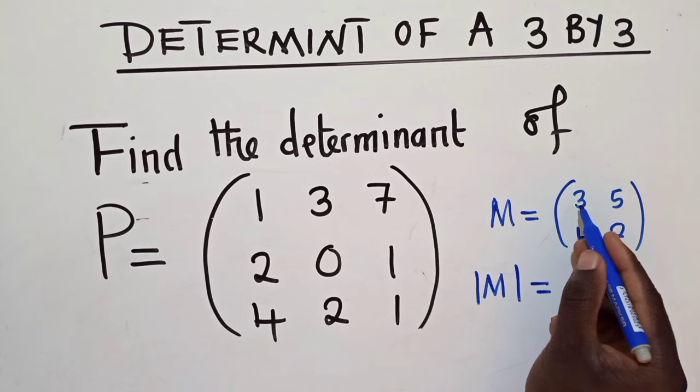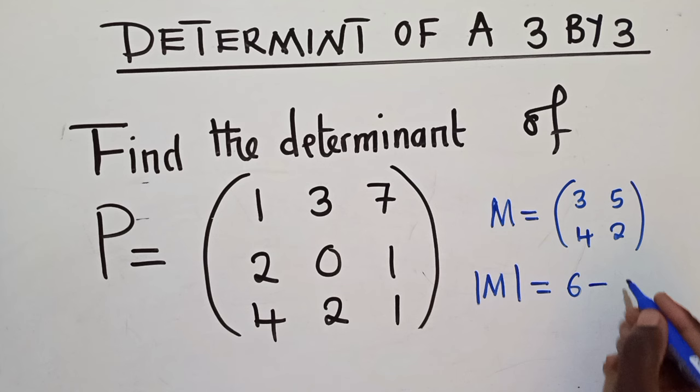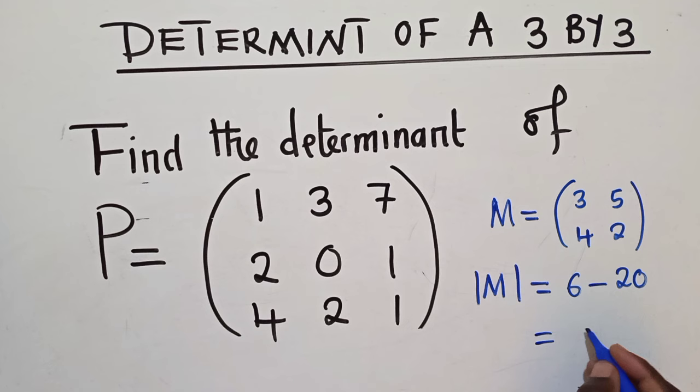Is equal to 3 times 2, it's 6, minus 4 times 5, which is 20. So the next thing here will be to simplify. We're getting negative 14. So this tells us that the determinant of this matrix is negative 14.